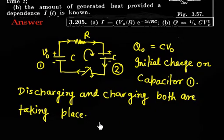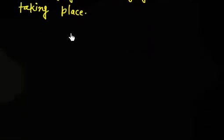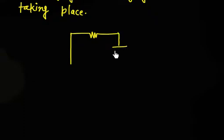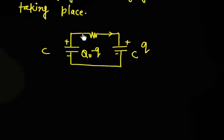Now I have to write down the equation and solve it. At any time t, let q be the charge that has flowed — so capacitor 1 will have charge Q0 minus q, and capacitor 2 will have charge q. The current is flowing in one direction. Capacitor 2 has plus charge on one plate and minus on the other; capacitor 1 also has plus and minus charges, and this is the direction of current flow.